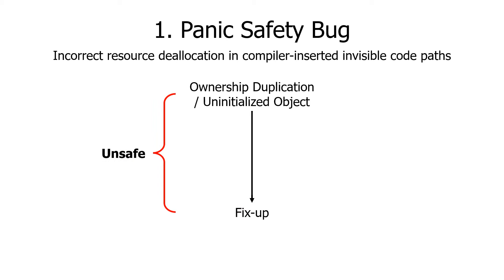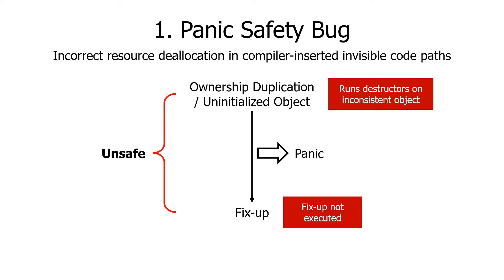Unfortunately, ownership and panic becomes a hassle when unsafe Rust is combined together. It is typical for unsafe code to temporarily introduce inconsistent objects, such as duplicating the object ownership or creating an uninitialized object. Of course, such bypass should be fixed up if unsafe code is correctly encapsulated. The problem is that if panic happens in between the ownership bypass and the fix-up, the invisible panic path will run destructors on inconsistent objects, and the fix-up routine is not executed. Achieving panic safety is difficult because the panic handling paths inserted by the compiler are invisible, and for each location, the programmer needs to manually track live variables, which is not a typical workload for Rust programmers.